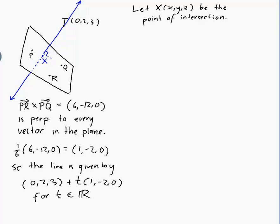Well, then X is on my line, so it looks like (0,2,3) + t(1, -2, 0) for some t. So, X = (0,2,3) + t(1, -2, 0) for some unknown t in R, but only one of them.